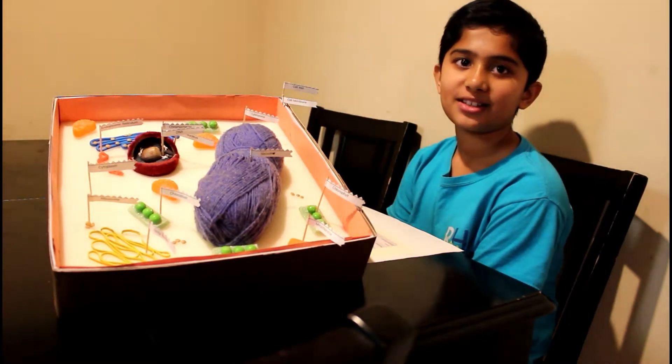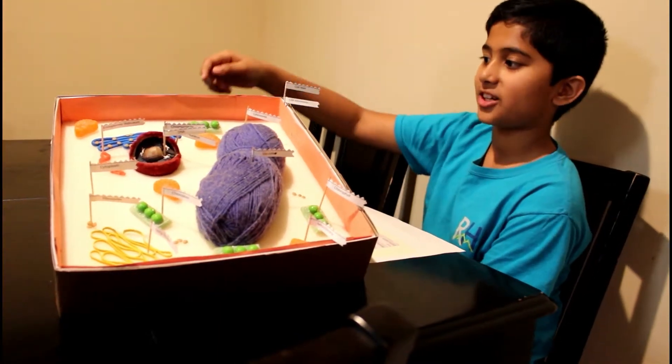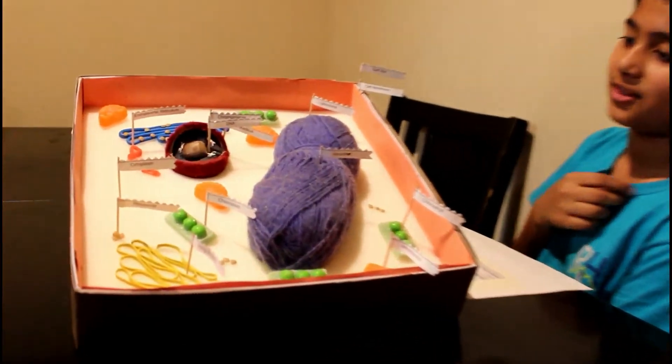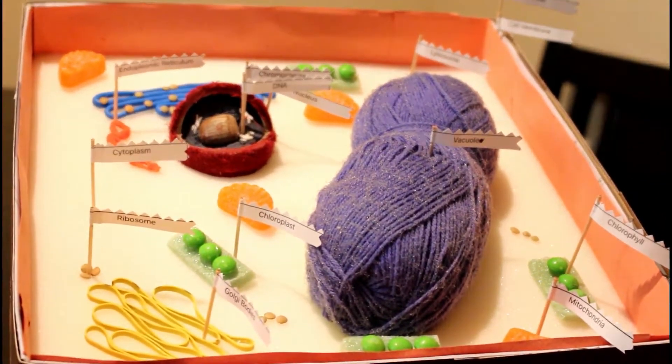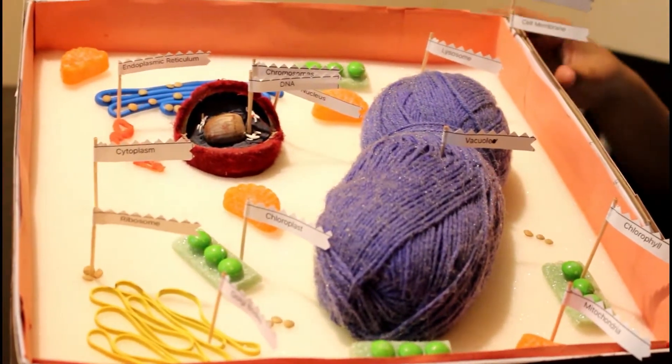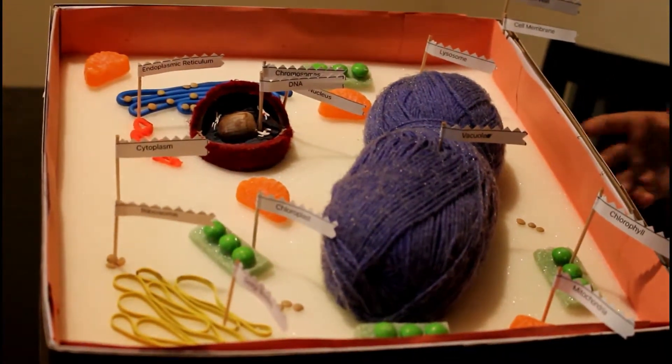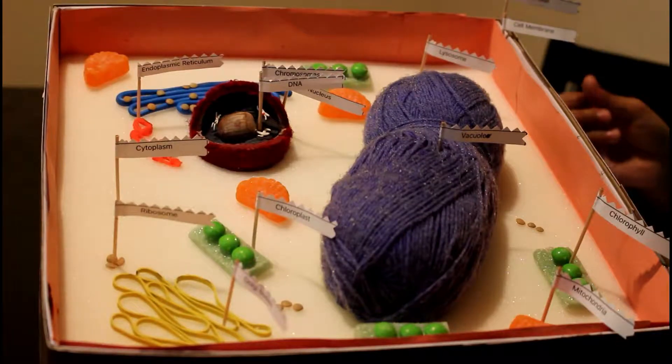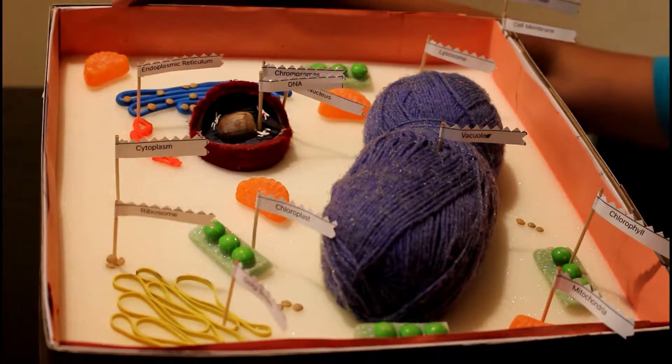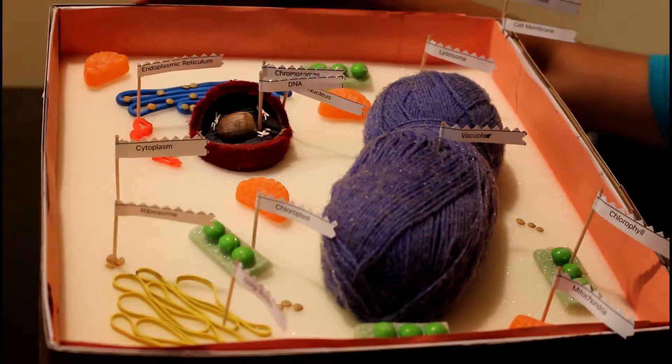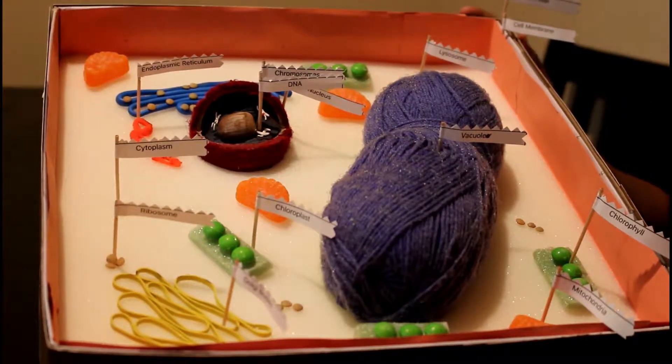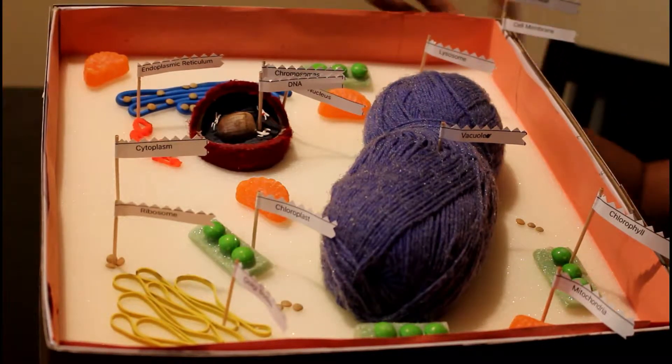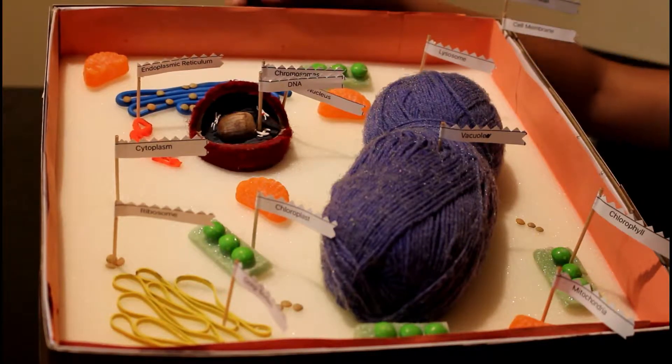Hey guys, welcome to my channel. Today I'm going to be showing you my science project. It is a plant leaf cell. A plant leaf cell has many organelles, and the first organelle on the outside is called the cell wall. It's rigid and gives the cell its thick shape.